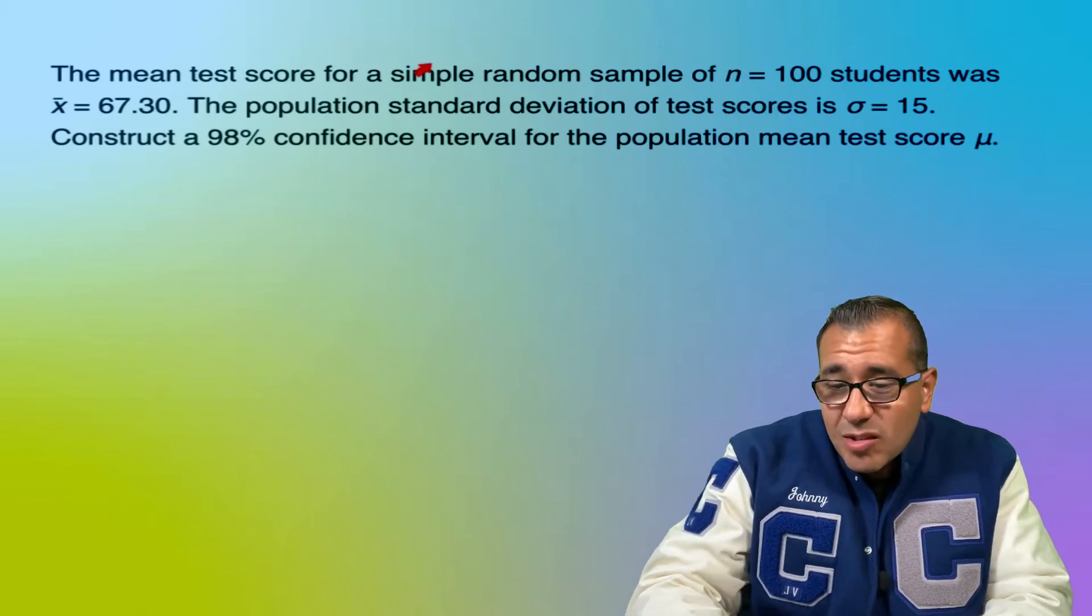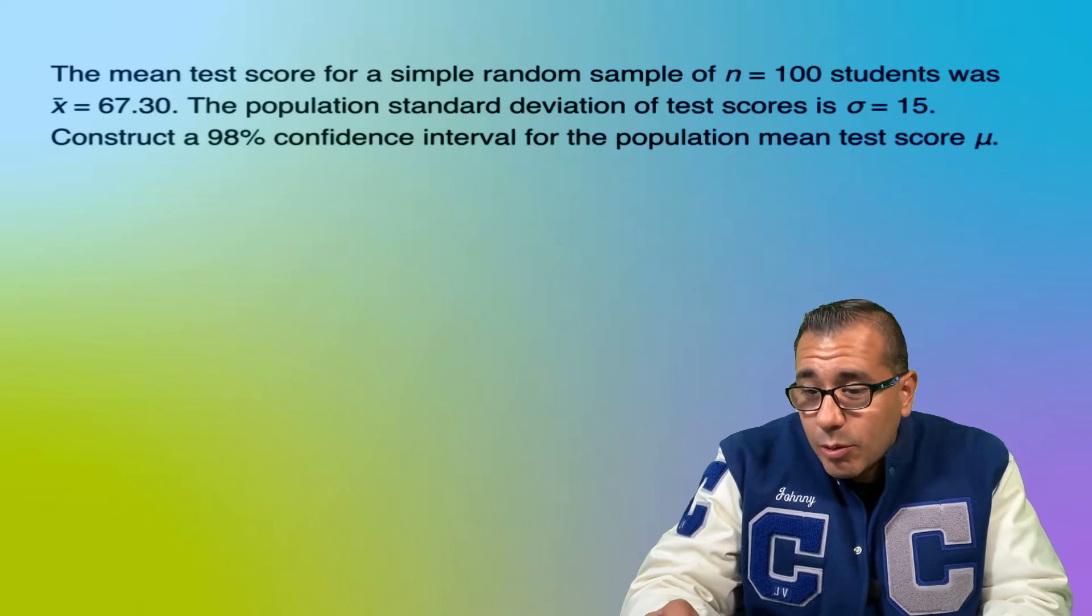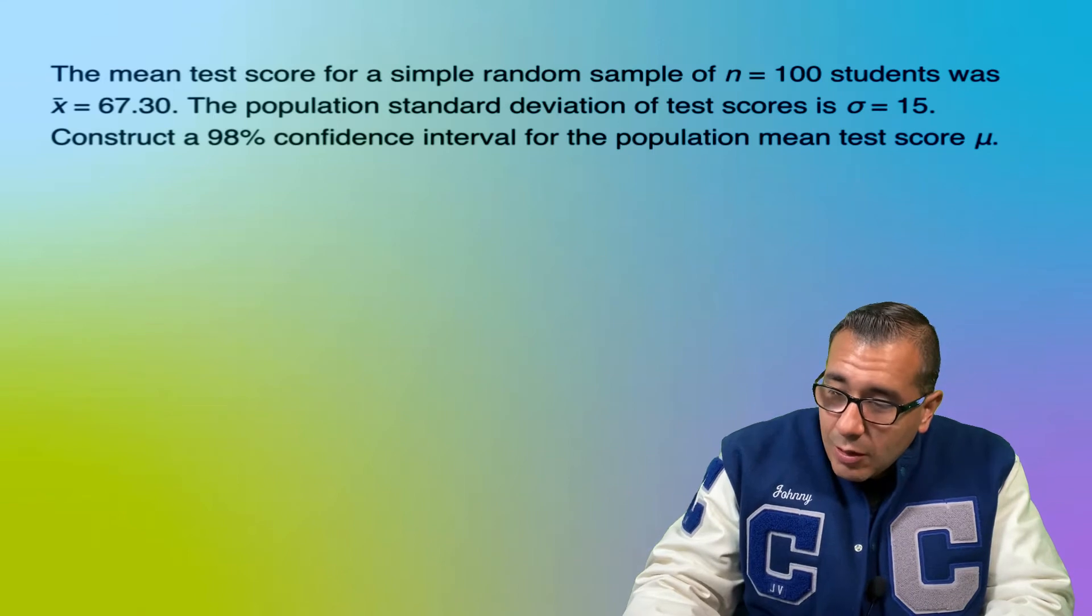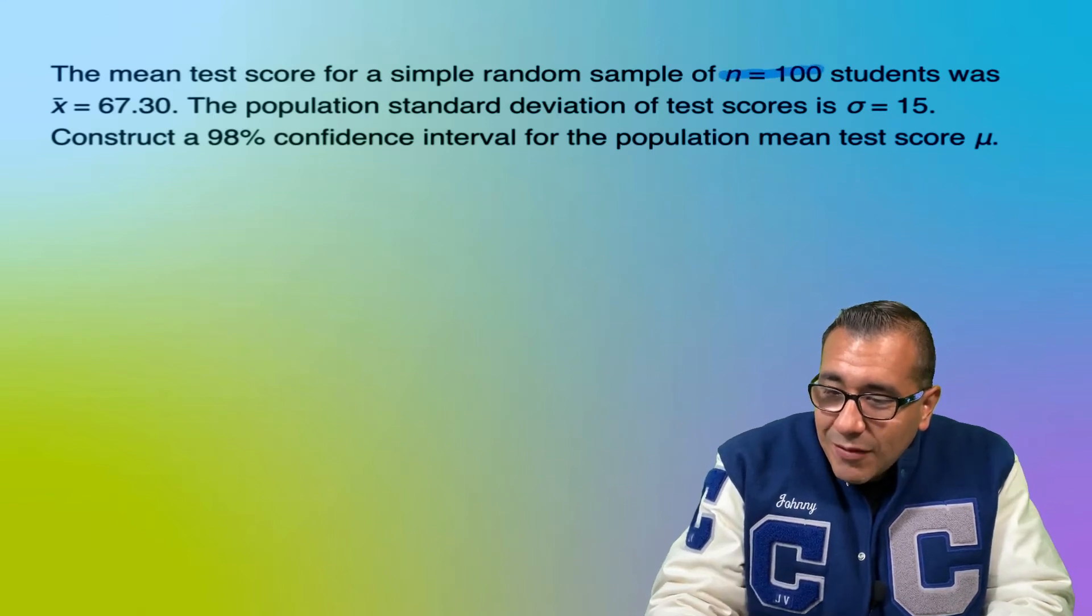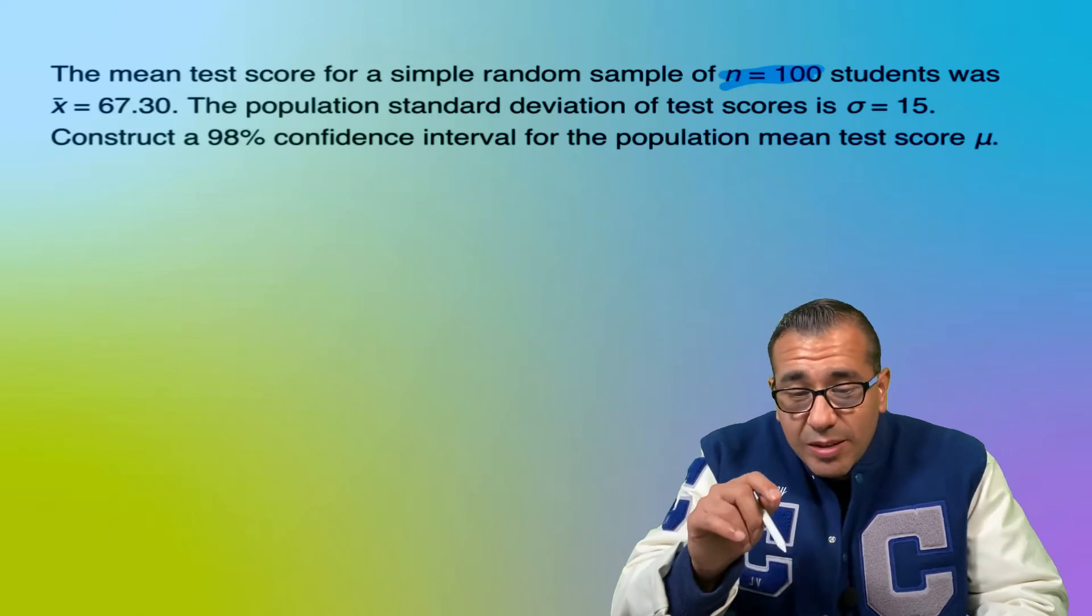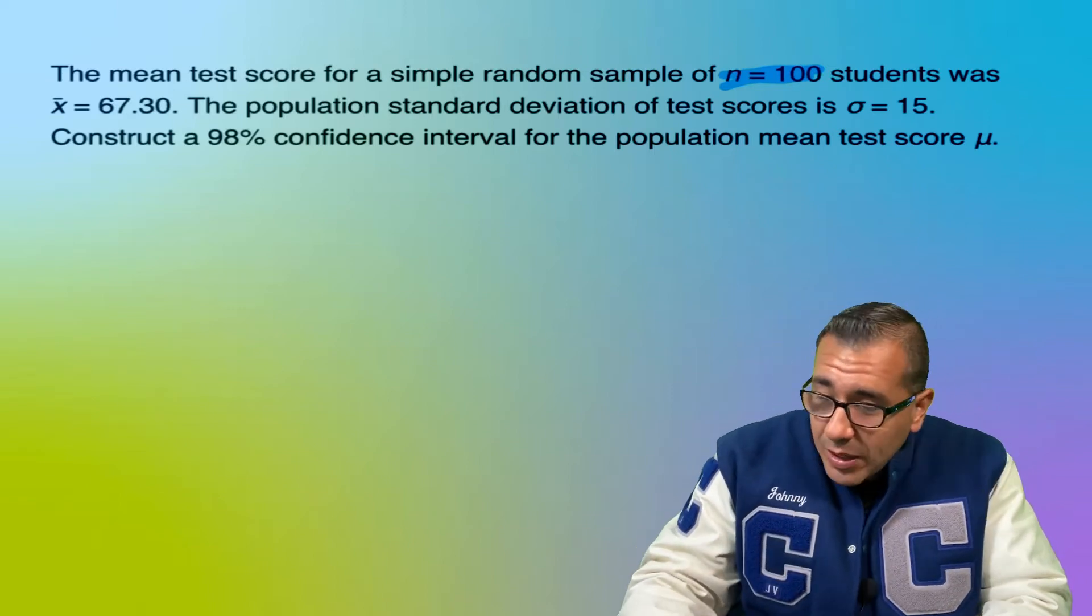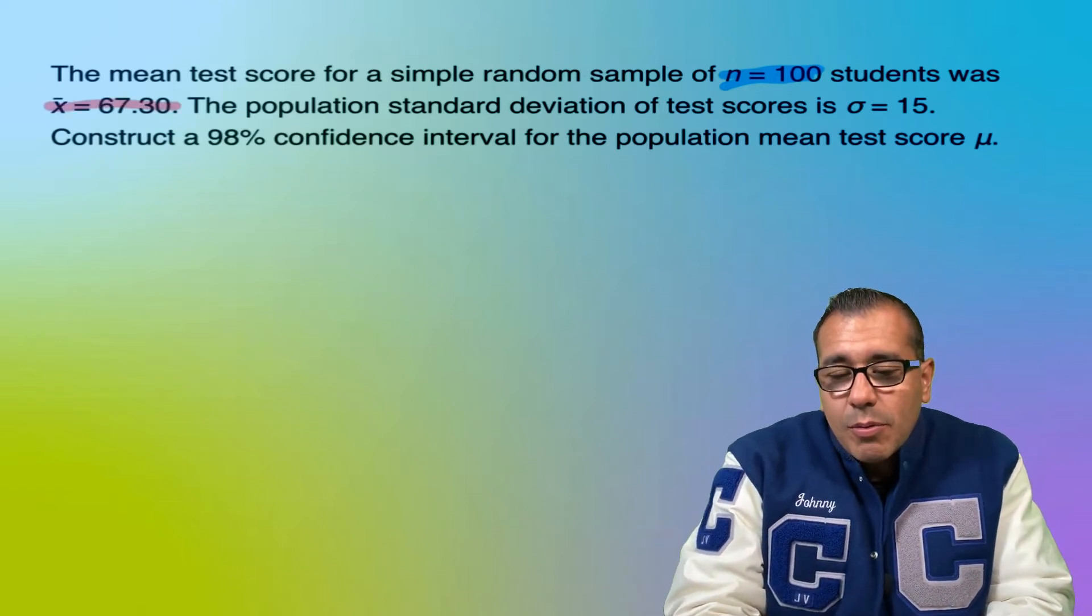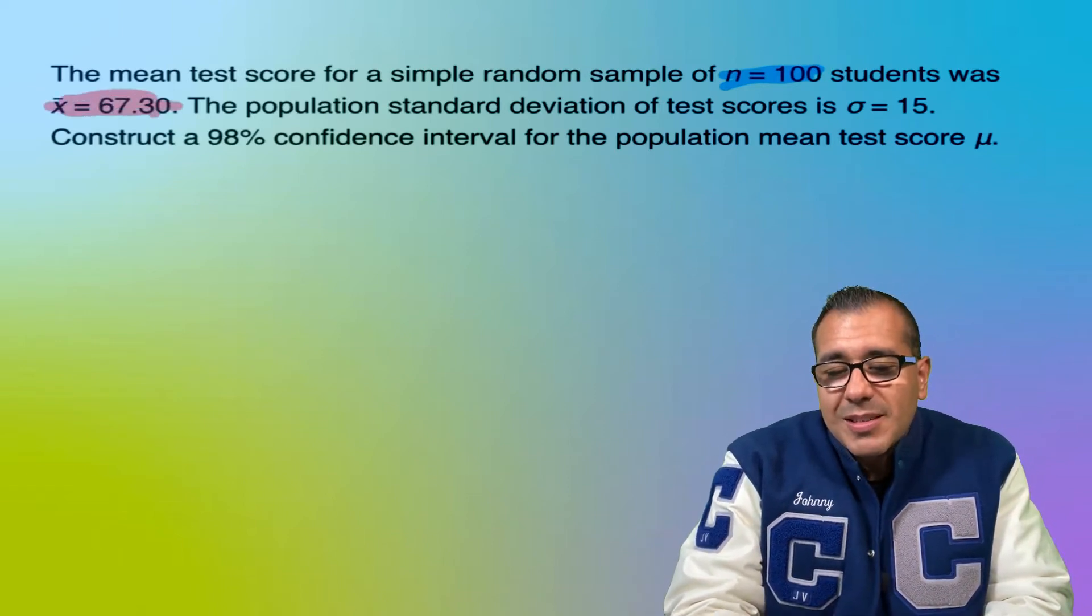So the mean test score for a simple random sample of n equals 100. So first of all, we're going to highlight that because our n value is 100. So we have 100 students and the mean there, which is our point estimate, is 67.3. So x̄ is 67.3.